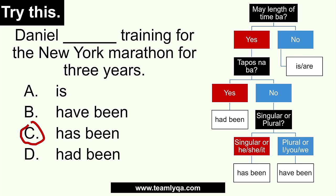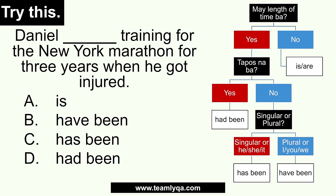Now let's change the sentence again: Daniel blank training for the New York Marathon for three years when he got injured. First question: length of time? Yes — three years. Next question: is the action done? Yes! Because he got injured — that interrupted or stopped his training. There's a second event. So the training started in the past, continued in the past, and ended in the past. The answer is had been. Daniel had been training for the New York Marathon for three years when he got injured.